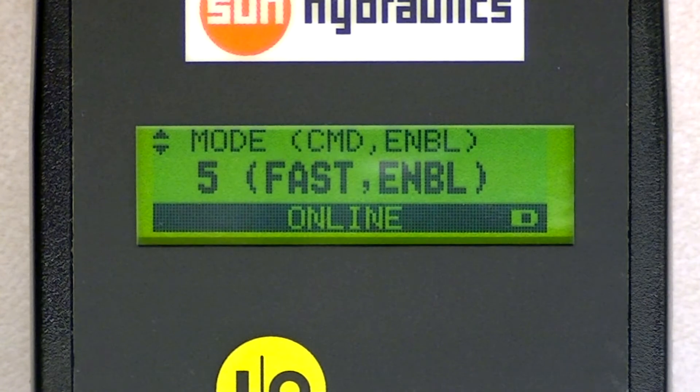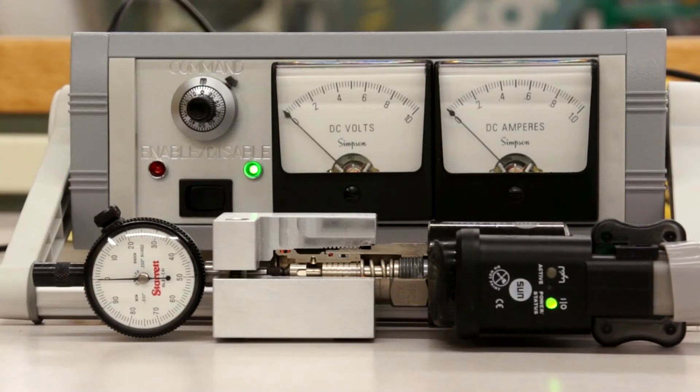The next mode is mode 5. Mode 5 is a 3-speed mode called fast with an enable. It is no longer proportional. The 3 speeds are off, the minimum output current that you set, and the maximum output current that you set.